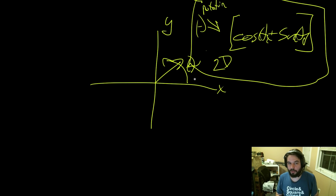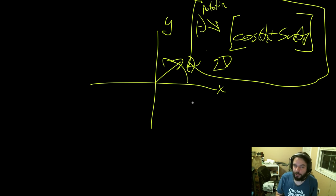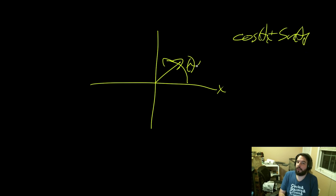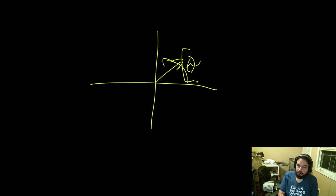If you're just talking about the rotation itself — the mathematical representation — it's just a point. Quaternions are the 3D equivalent of just this point.